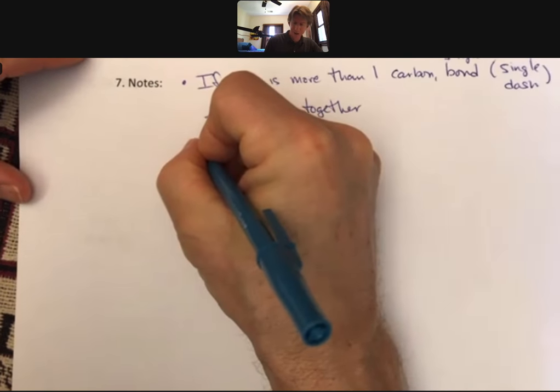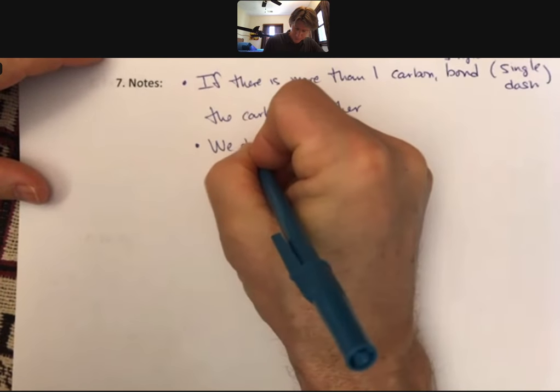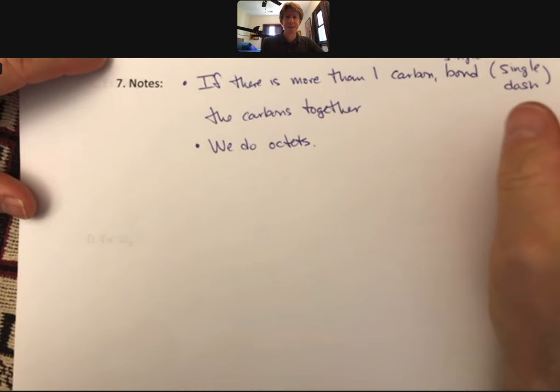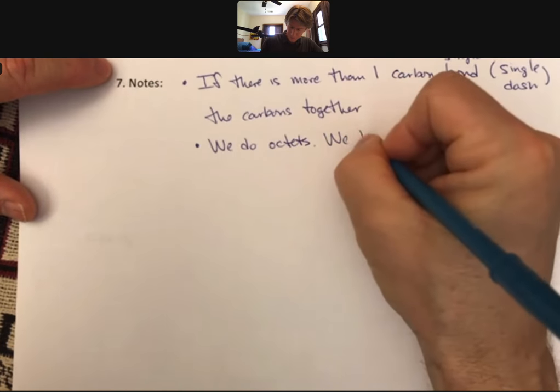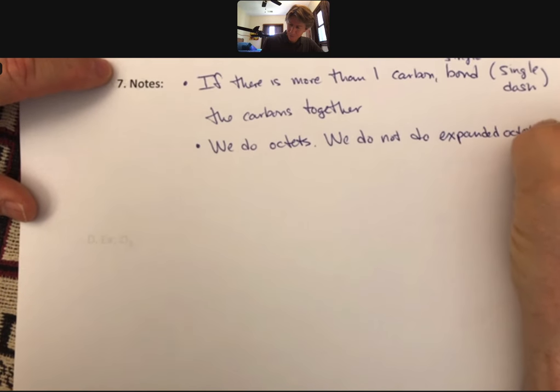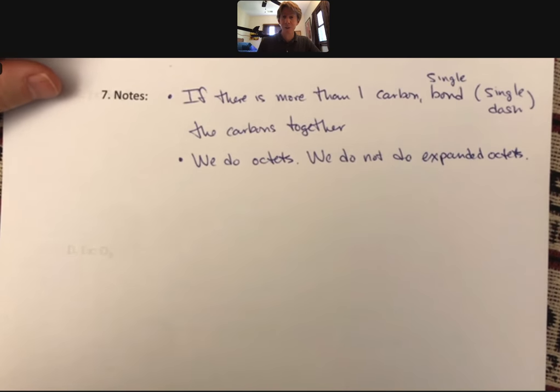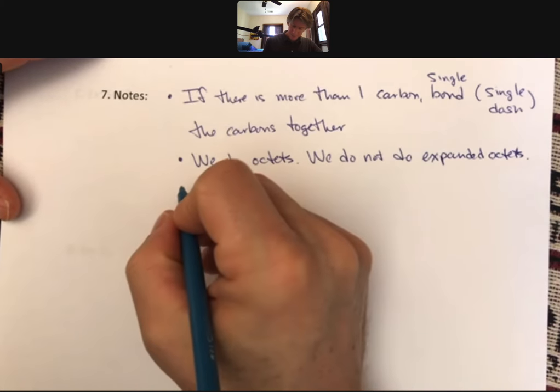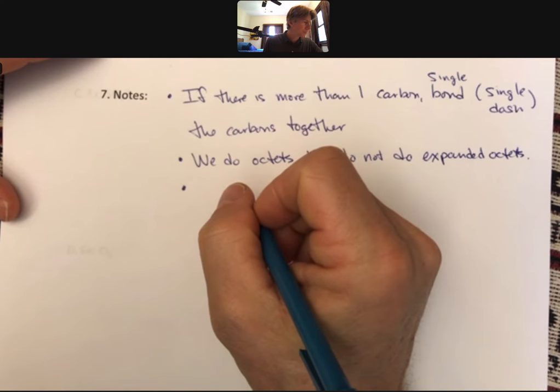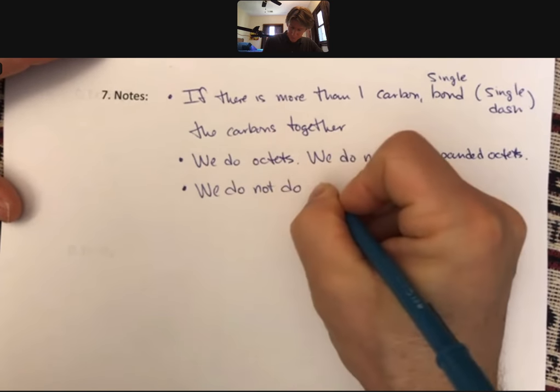Right? Our idea is that in general, they'll share one pair of electrons. Sometimes they do more, but we start with one. And as I mentioned before, so we do octets. Next, we do not do expanded octets. And I tell you this because when you look at some of the materials online, you will see that some of the ways include doing expanded octets. That is for general chemistry, the next class in this series, is not for the chemistry that we're doing.